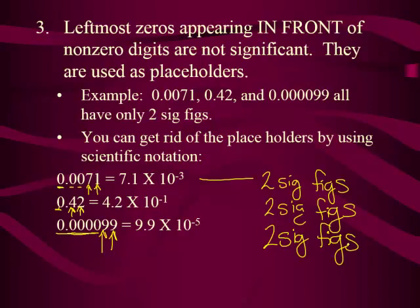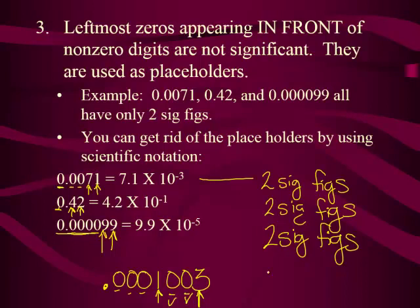Let me test you and try to confuse you just a smidge — make sure you don't forget rule number two, the bookend rule. Check out this example: .0001003, a very small value. Do the zeros in the front count? No. Does the one count? Yes. Does the three count? Yes. And then you have zeros in between — that's the bookend rule. How many sig figs does this value have? Four sig figs.